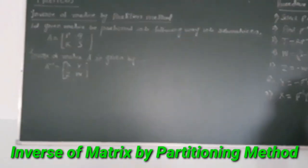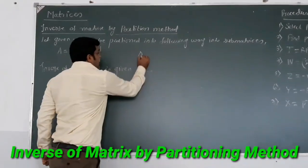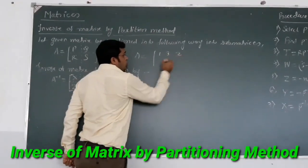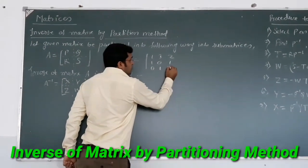For example, if I take one matrix of order 3 by 3, suppose matrix A is of this type: [1, 3, 2; 1, 0, 1; 0, 1, 3].